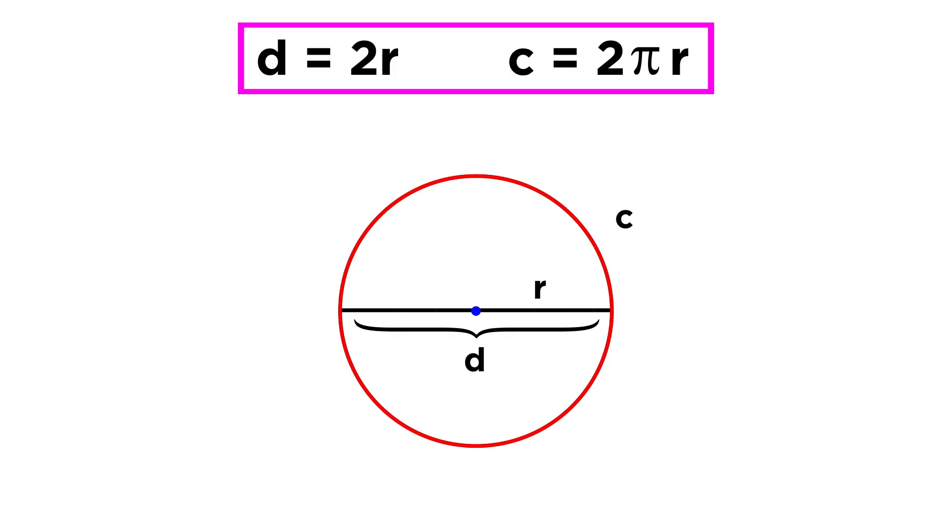Knowing this, if we are given any of these values for a circle, we can find the others. For example, if the radius is five, what is the circumference? Well, we can double the radius to get a diameter of ten, and then multiply by pi to get a circumference of 10π.